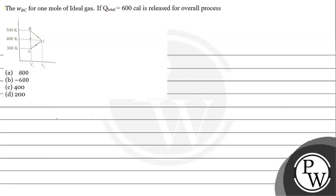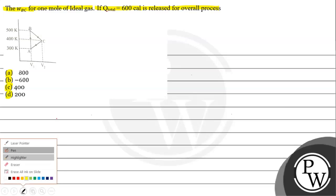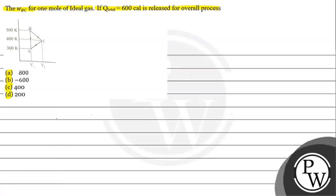Let's read the given question. The question says: the work done from process B to C for one mole of ideal gas, if Q total equals 600 calories released for the overall process. Option A: 800, Option B: minus 600, Option C: 400, Option D: 200.